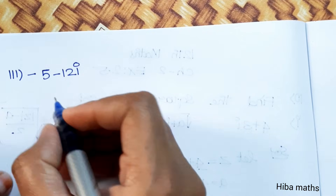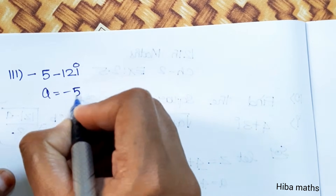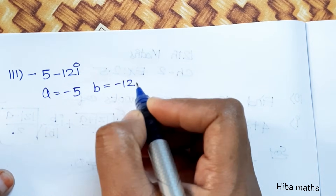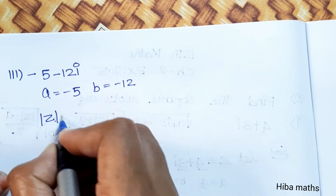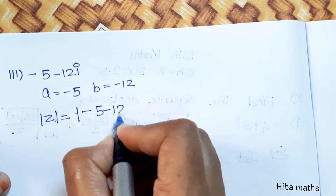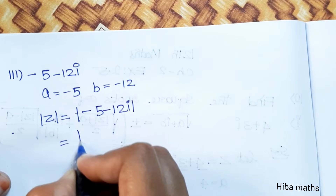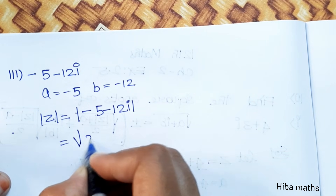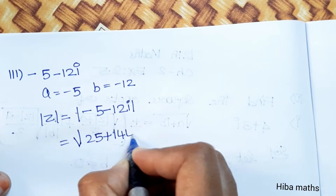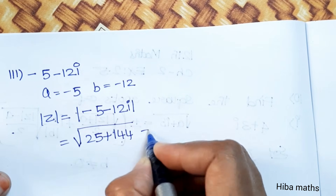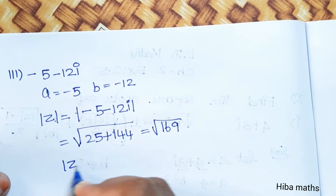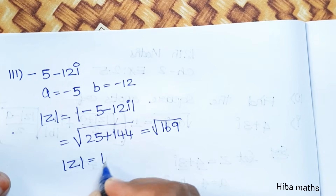Third subdivision: root of (-5 - 12i). Here a = -5 and b = -12. Mod z = |(-5 - 12i)| = root of (5 squared + 12 squared) = root of (25 + 144) = root of 169. Mod z = 13.